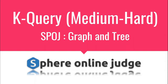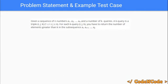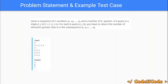Hello guys, this is Code Encode and this is a video editorial for the problem K Query taken from SPOJ. The problem is simple: you are given an array of size n and also k queries. In each query you will be given a triplet i, j, and k, where i and j are indices into the array. Basically, in the range i to j in the array, you have to return the number of elements which are strictly greater than k.